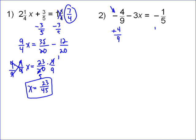So over here, we're gonna add 4 ninths. That leaves us, this is a negative 3x, so it leaves us with a negative 3x here, equal to, and it's gonna be negative 1 fifth plus 4 ninths, and the least common denominator here is also 45.